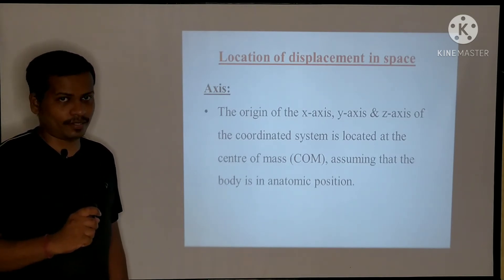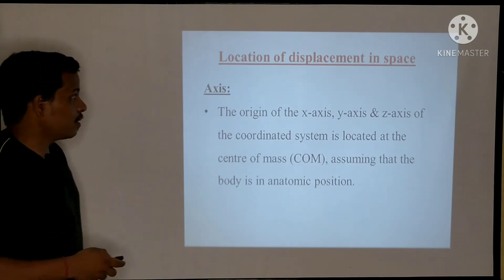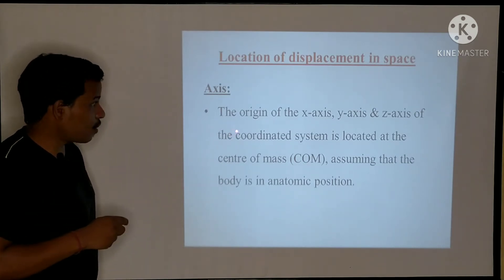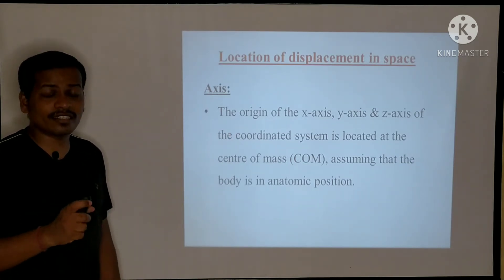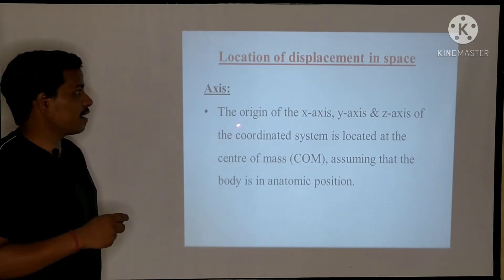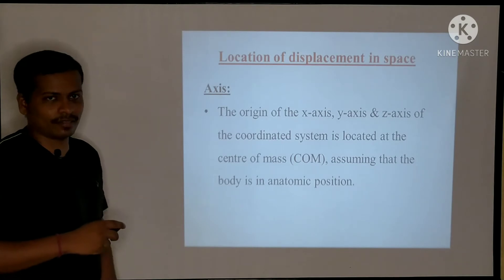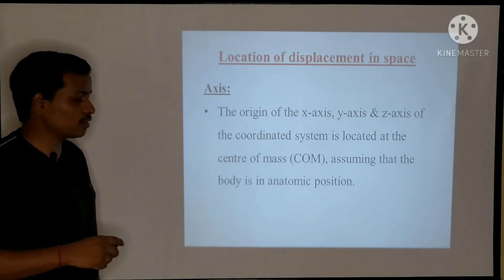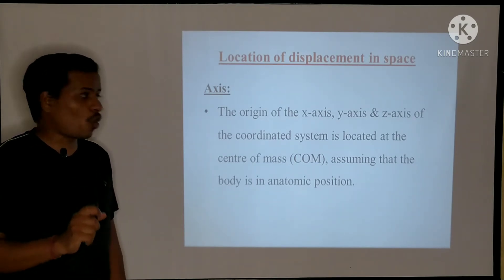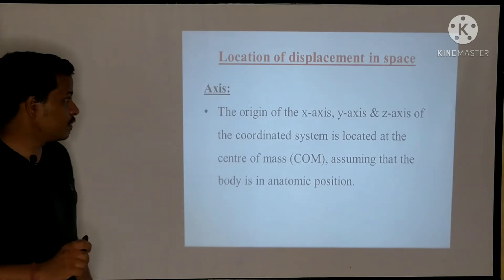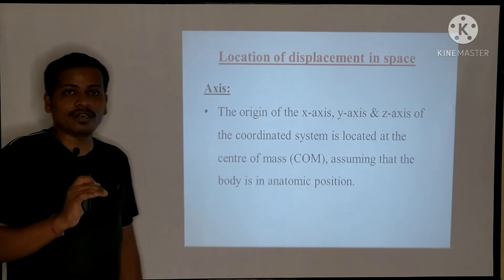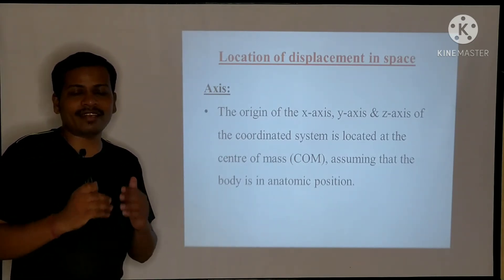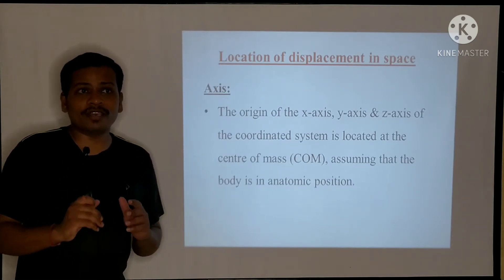What are axes? First, let us see the origin of the axes. There are three axes known as the X-axis, Y-axis, and Z-axis of the coordinate system. These axes originate at the center of mass.